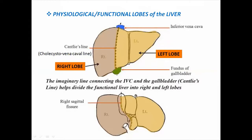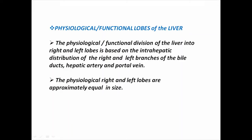The physiological or functional lobes of the liver are demarcated by a line passing on the posterior inferior surface through the fossa for the gallbladder and the groove for the inferior vena cava. On the anterior aspect, this imaginary line joins the inferior vena cava with the cystic notch, slightly to the right of the falciform ligament attachment. This line is known as Cantlie's line or the cholecystophrenic line. The physiological right and left lobes are based on the intrahepatic distribution of the right and left branches of the bile ducts, hepatic artery, and portal vein, and are approximately equal in size.